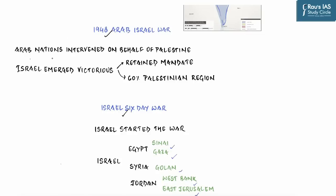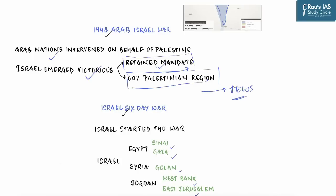In 1948, following the declaration of the state of Israel, the group of Arab nations known as the Arab League decided to intervene on behalf of Palestinians by ordering their troops to march into areas given to the Jews. The war was prolonged, but Israel emerged victorious — it not only retained the territories allocated to it by UN resolution but also captured around 60 percent of the territory given to Arab people. For the next 10 to 15 years, things remained mostly the same.